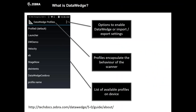DataWedge is running on every Zebra Android mobile computer, and it gives you the ability to capture data with a zero-code solution — without writing any code, I can configure the barcode scanner on my device, the Magstripe reader, the SimulScan capabilities, and output any of that captured data through keystrokes, Android Intents, or IP to some remote computer. How I do that capturing is encapsulated in a profile. You have several DataWedge profiles configured on your device, and when a specific app comes to the foreground, you activate a specific profile.